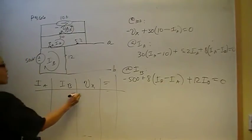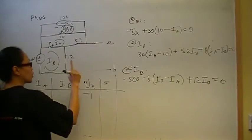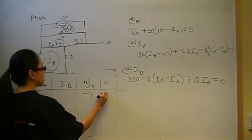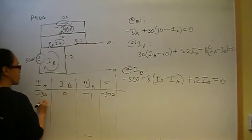Okay, from the first equation we have a negative 1 coefficient for Vx. We have 300, positive 300, which will go on the other side with the constant as negative 300. And then we have negative 30 for I-A and no occurrences of I-B.